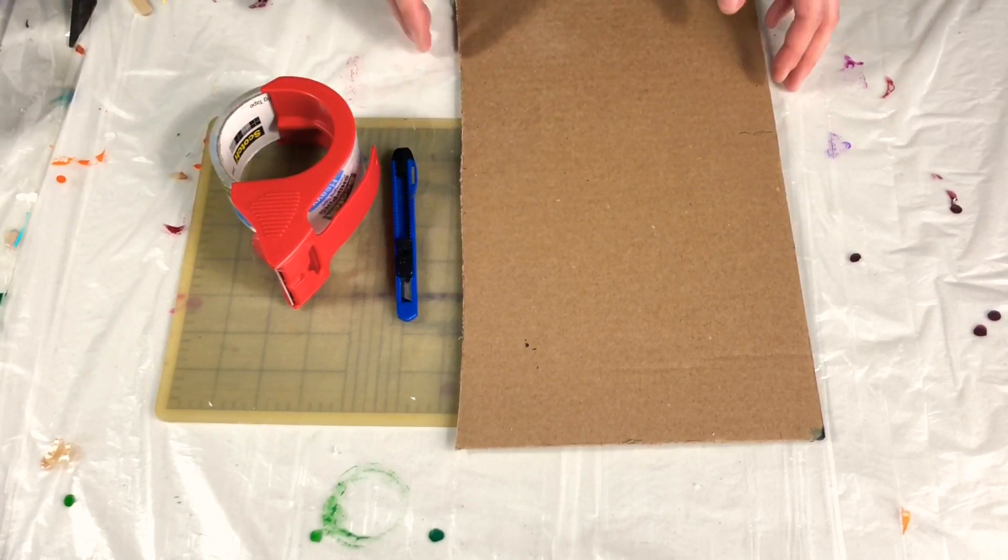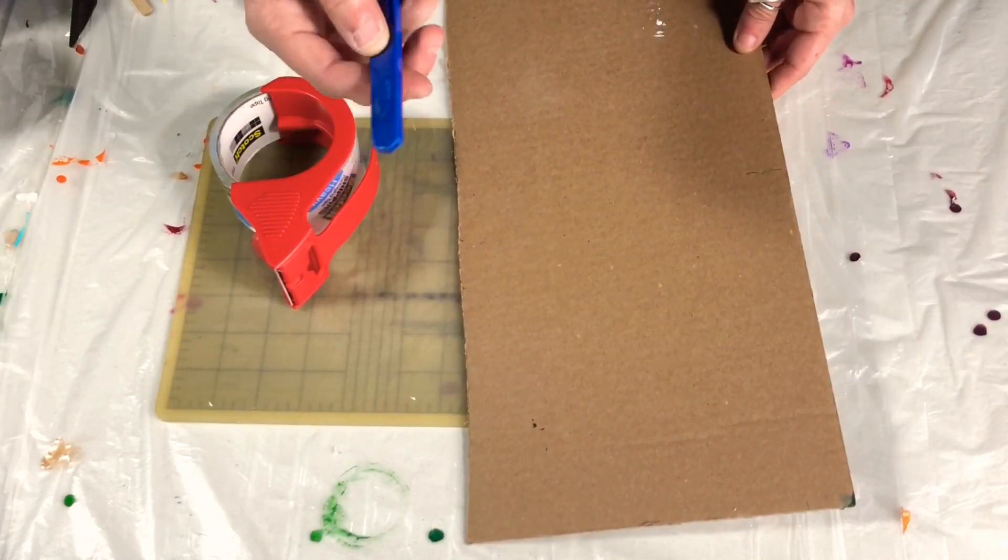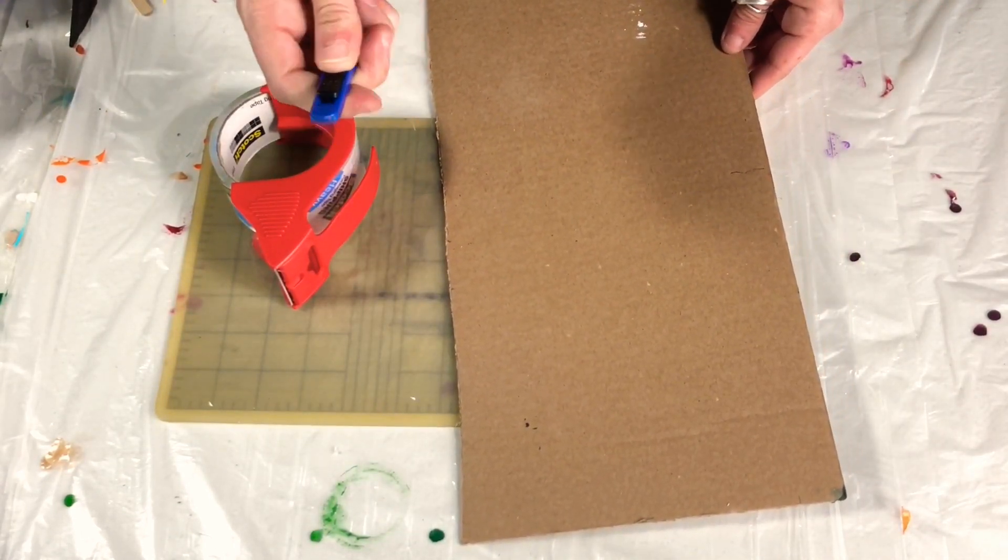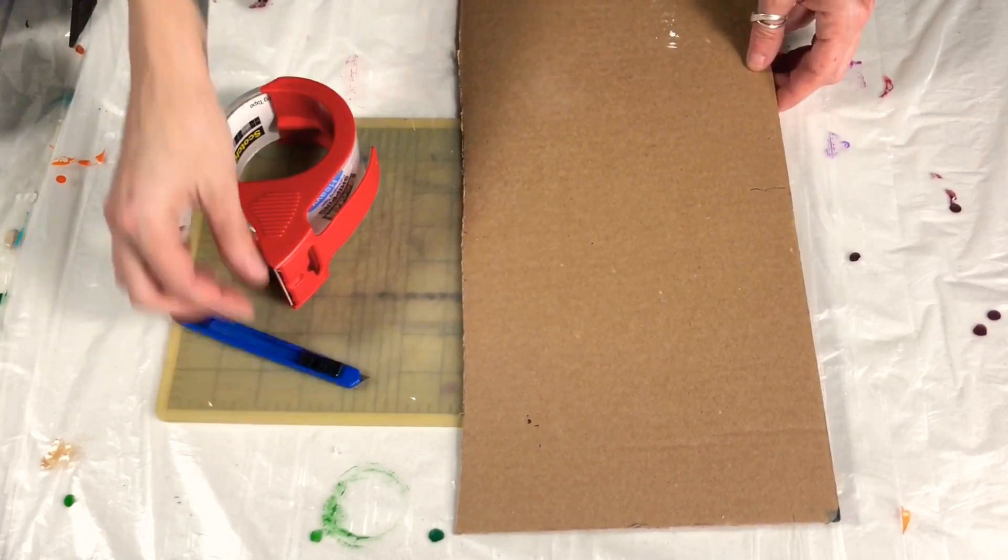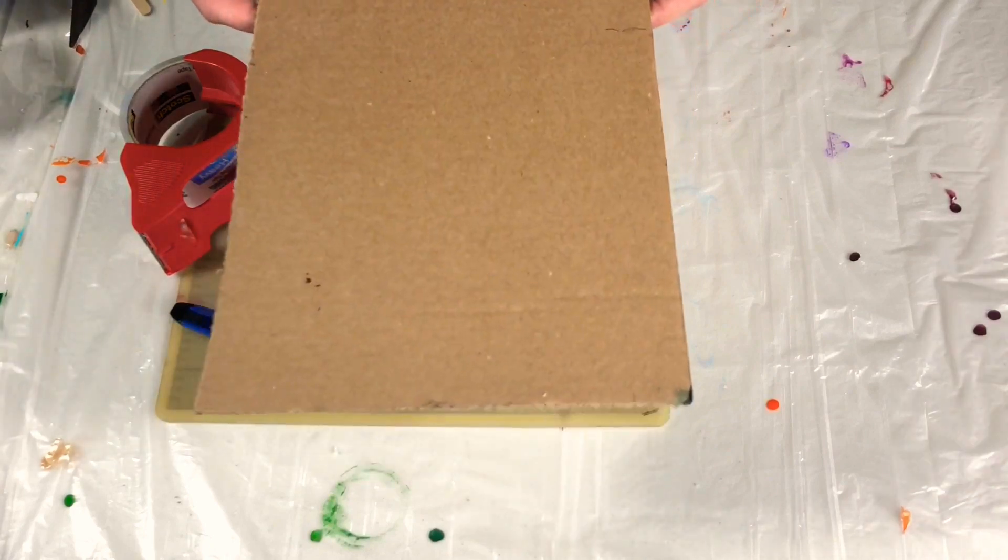So what I do is take just a piece of cardboard, could be scrap cardboard, recycling is better. You need an exacto knife and I'm going to show you a super simple trick with some shipping tape.